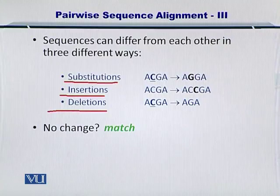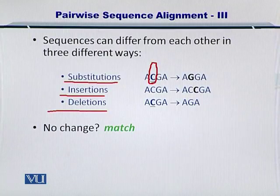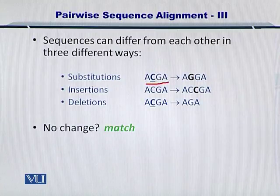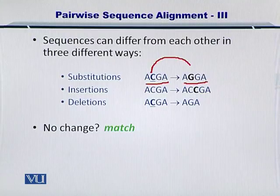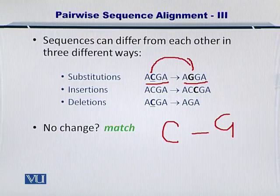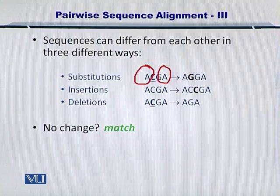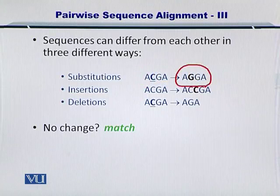If there are substitutions, as you can see here, C has been replaced by a G. So the sequence ACGA has become AGGA. This substitution is actually a mismatch because C does not match G. The rest of the three nucleotides, AGA, are matching very nicely. So there is only one difference between these two sequences, and this difference can be classified as a substitution.